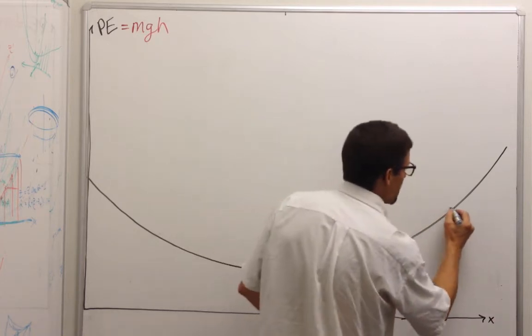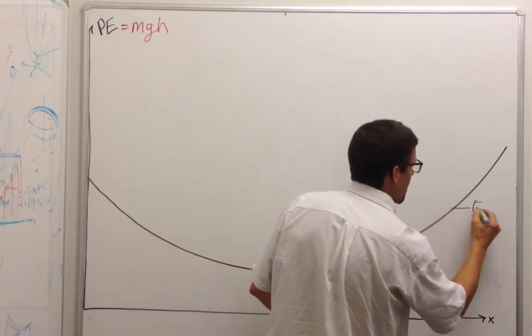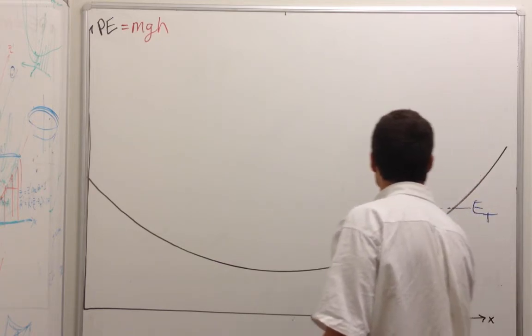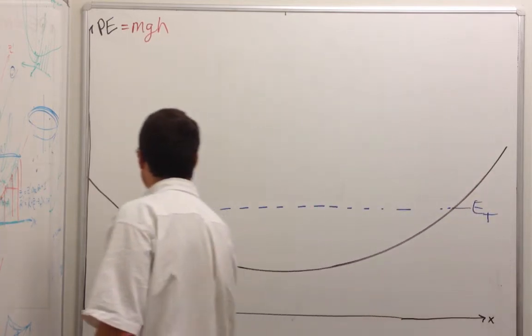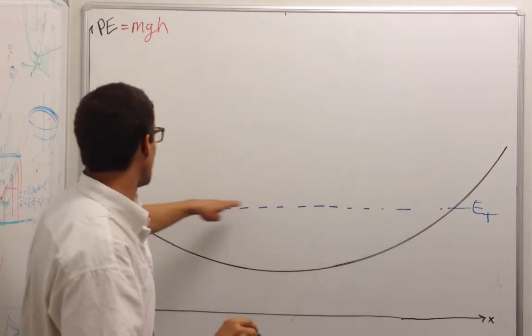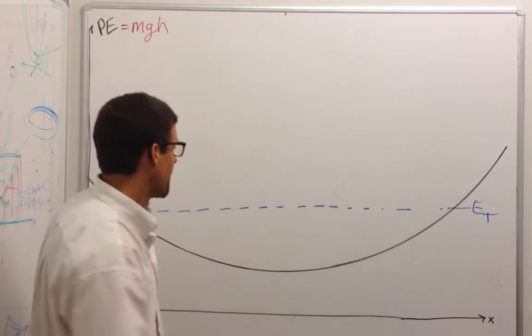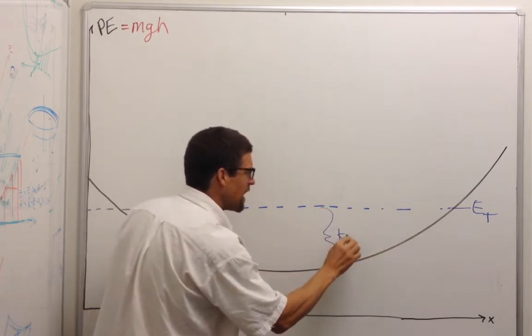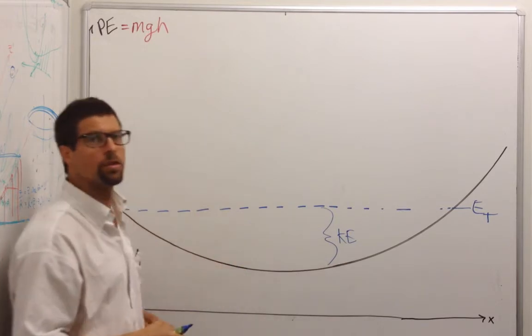This would be, for instance, my total energy, and this is constant in time and in space. The total energy is the same all along back and forth, but the potential energy drops. So this is the kinetic energy, the difference in the two.